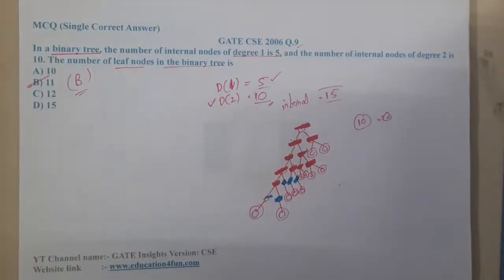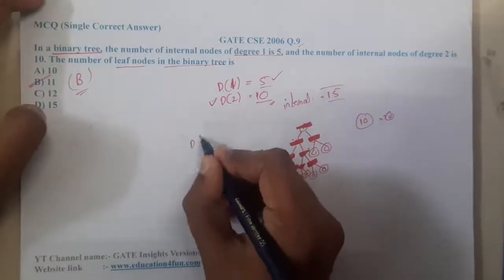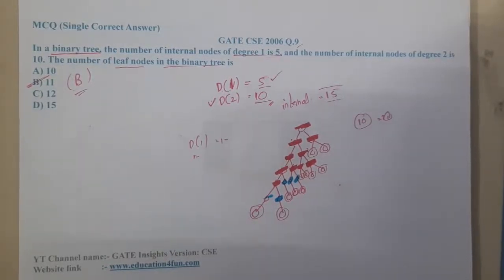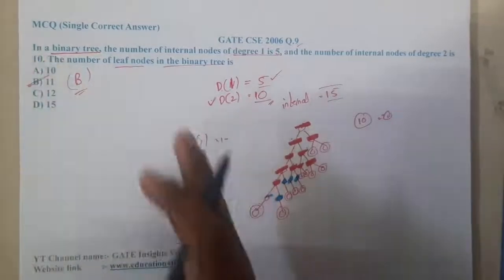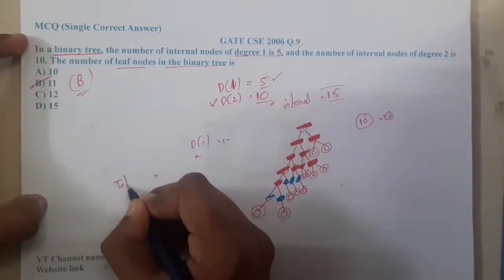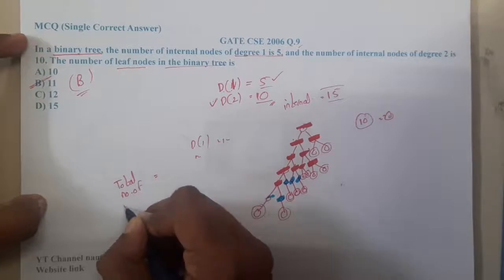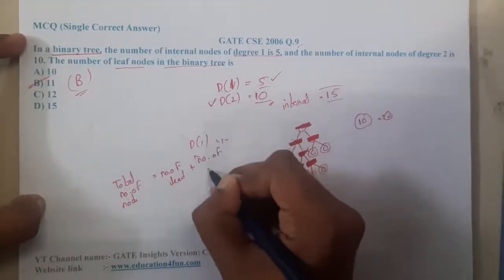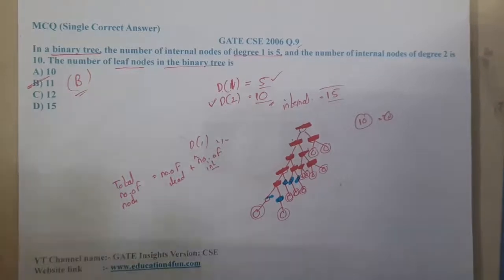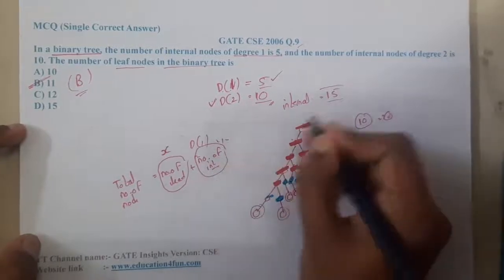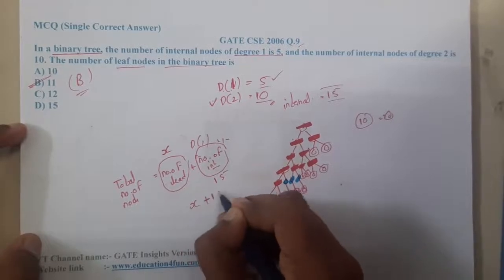Now, what if the question had degree-one nodes as 100 and degree-two nodes as 200? Drawing a diagram would be too complex. That is the reason we need to derive a formula. Recall the formula: total number of nodes = number of leaf nodes + number of internal nodes. Here we need to find the leaf nodes (x), and we know the internal nodes = 15.